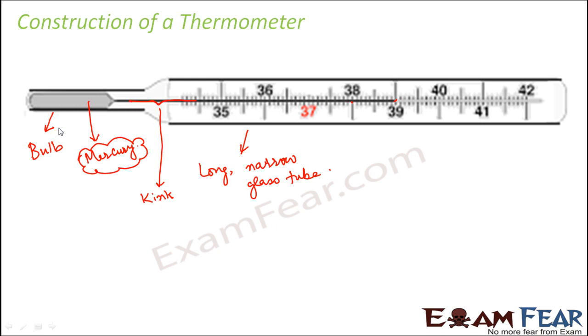So how will you read the temperature? So in order to prevent that scenario, the kink is present. So that to whatever level the mercury has gone, it will remain there until and unless you physically jerk the thermometer to bring the mercury level down. This is how the basic construction of a chemical thermometer is.